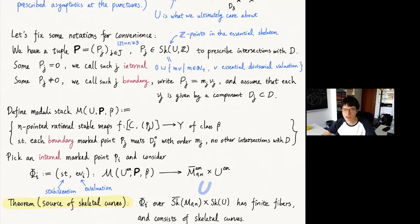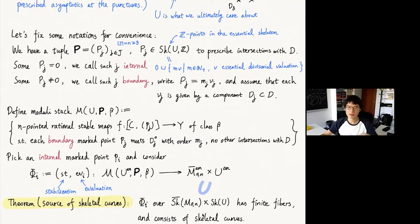Now we have the theorem — source of skeletal curves — which says that phi_i over the skeleton inside the target has finite fibers. Moreover, the fibers consist of skeletal curves, which means that the pre-image by phi_i of this skeleton inside the product consists of skeletal curves. That's the way we produce skeletal curves in practice. We consider the closure of the skeleton — this is a bit stronger and important because we also want to consider degenerate domains. As in the classical theory of Gromov-Witten invariants, it is useful sometimes to degenerate stable maps and to break them apart. So that's why we also consider the closure of skeleton, which contains these degenerate curves.